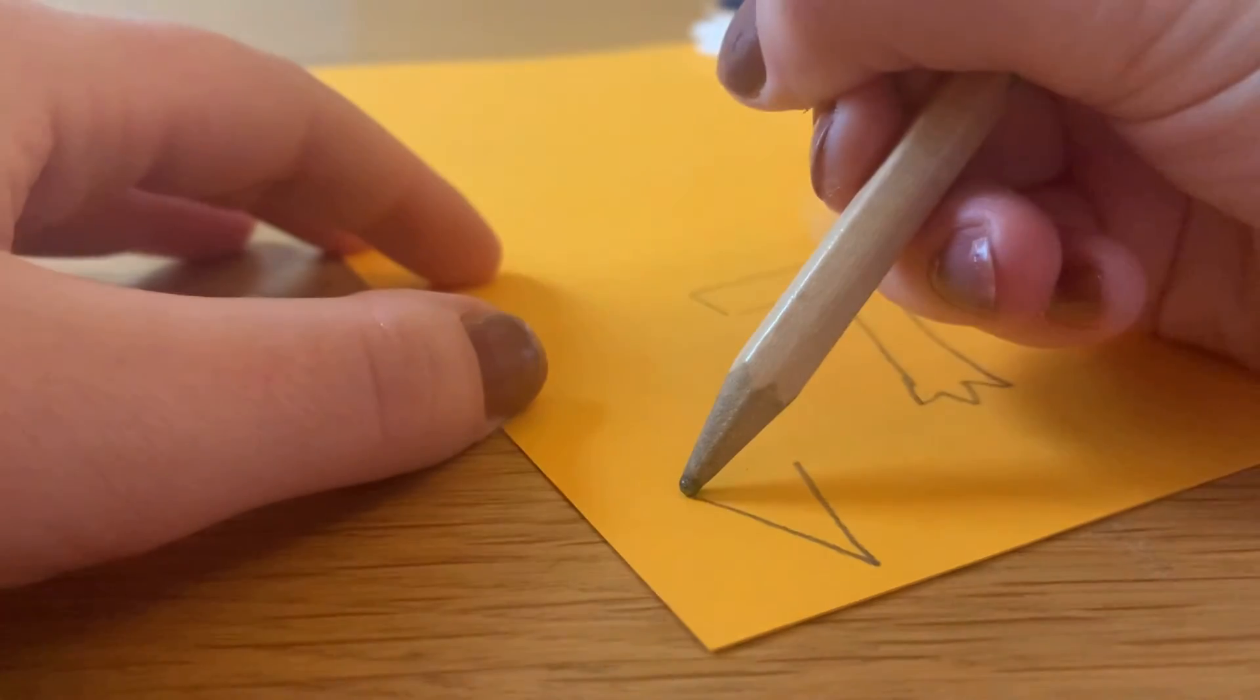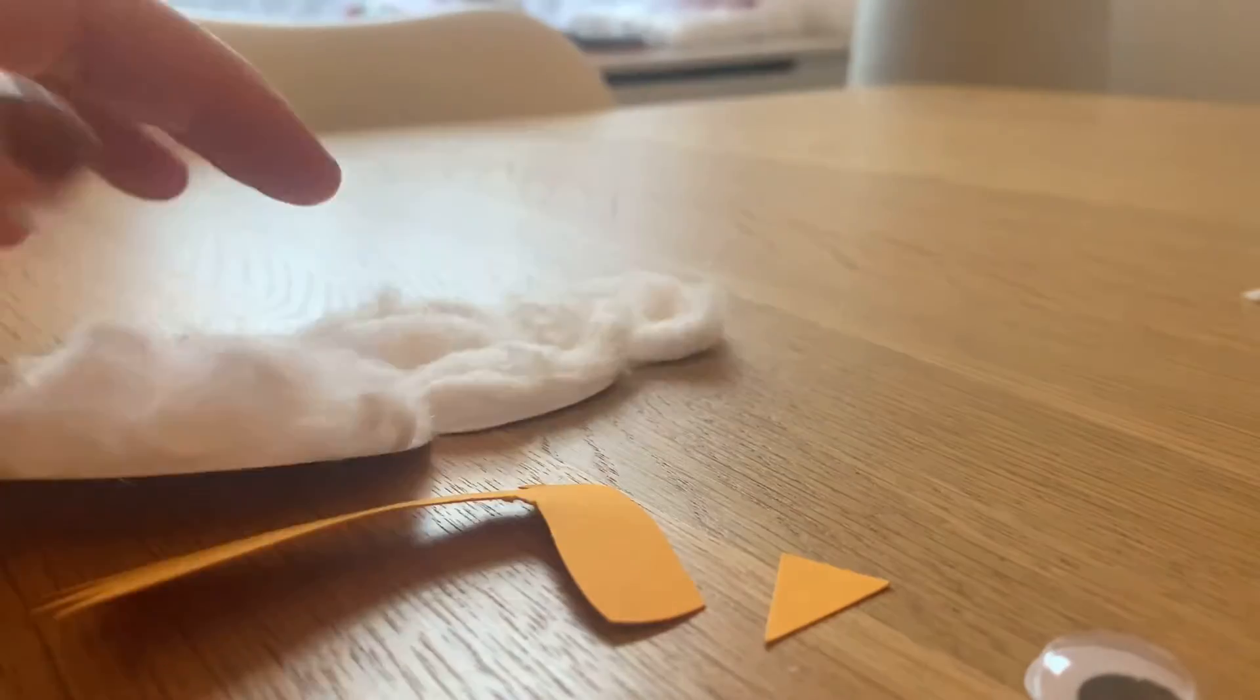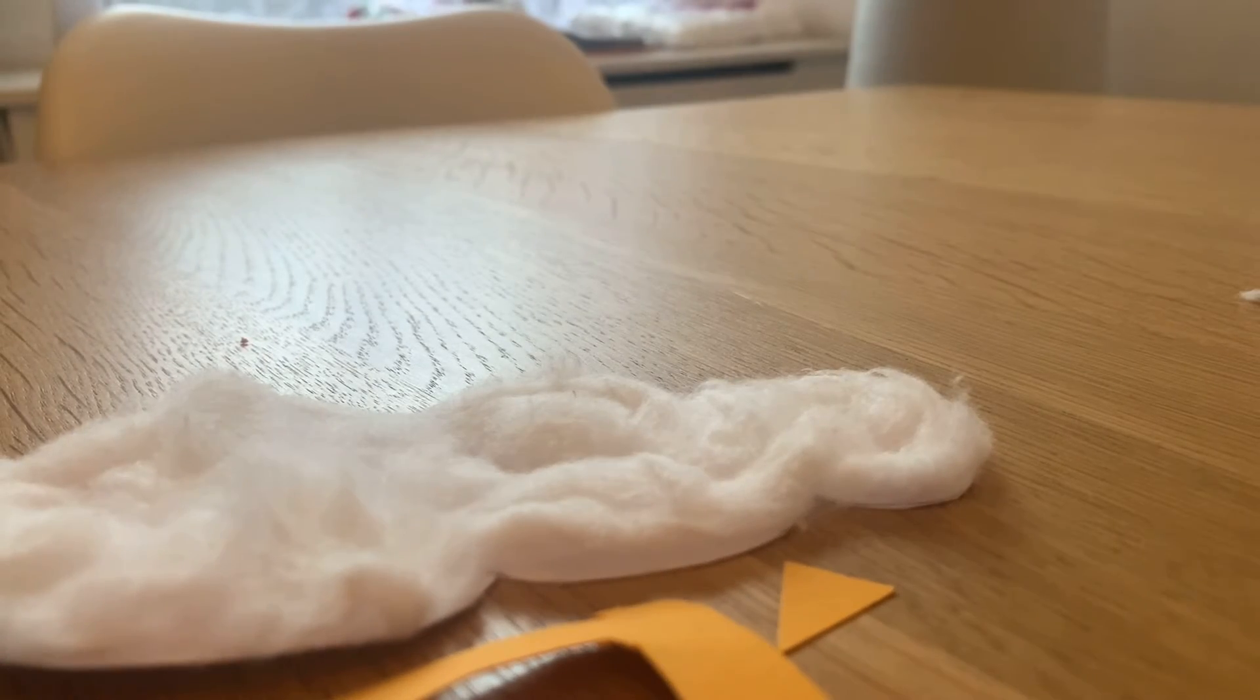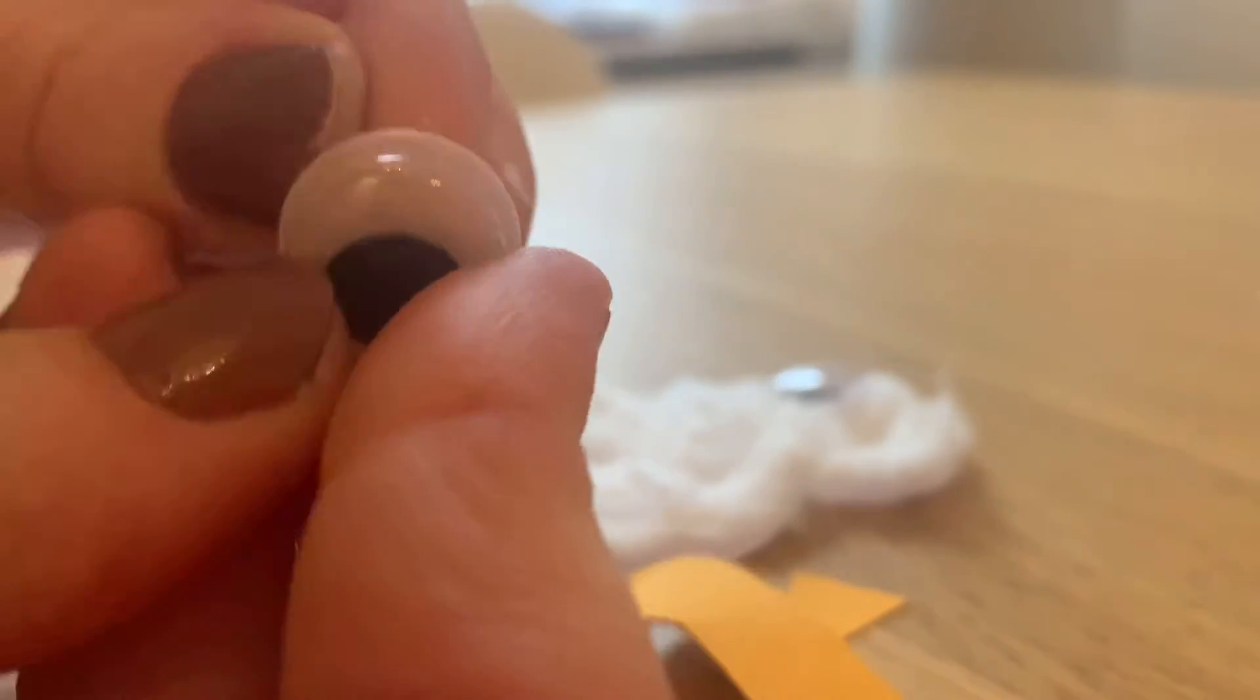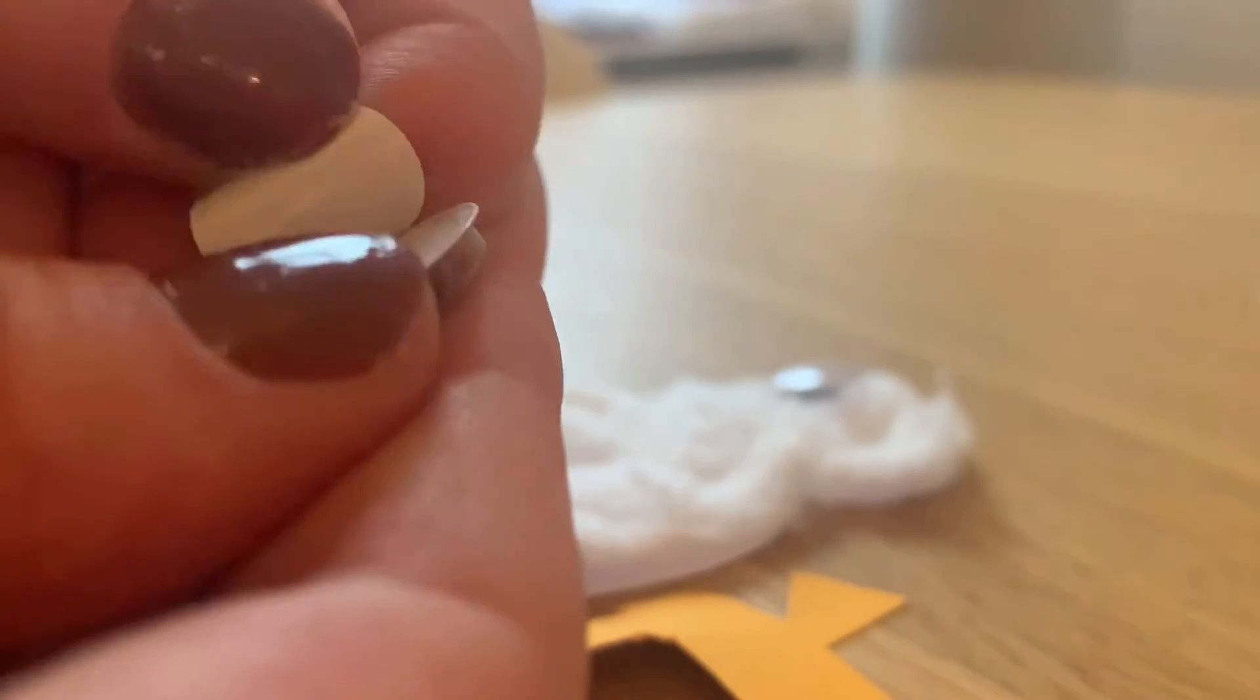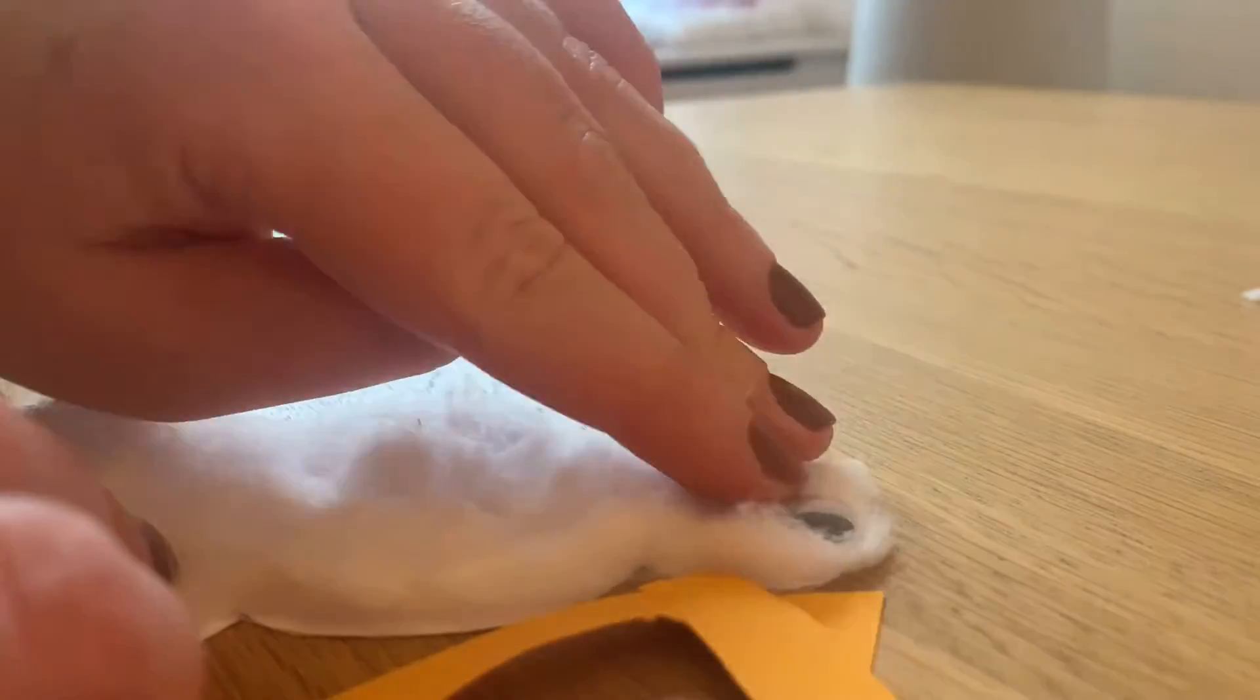When you're ready, cut those out and get your googly eyes, and we're going to start sticking them onto the body of our snow person. So do your googly eyes first. Remember to take the backing off, and if you don't have googly eyes, absolutely fine, you can use a felt tip. The googly eyes can be quite fiddly to get off, so if you're struggling like I am, you might want to ask an adult to help you.